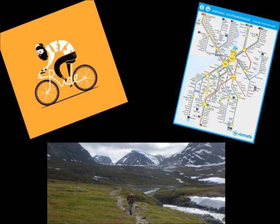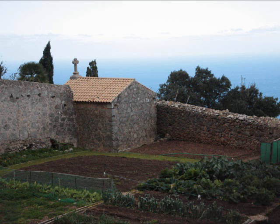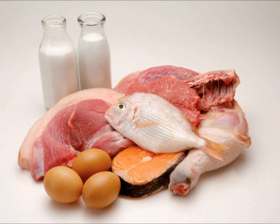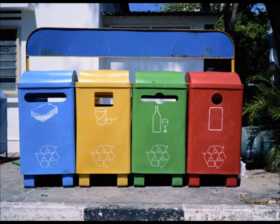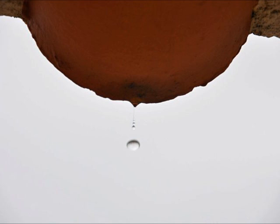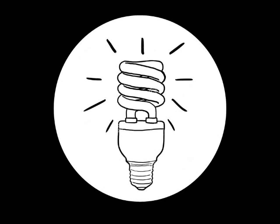Use public transport, ride a bike or walk, but try not to drive your own car. Buy locally produced food, or even better, grow your own vegetables and fruits. Try to reduce the amount of animal proteins — meat, fish, eggs and dairy products — you eat per week. Do your best to recycle as much waste as possible. Buy secondhand clothes and furniture instead of brand new stuff. Use only the water you need. Turn off the lights when you leave a room and use energy-saving lighting.